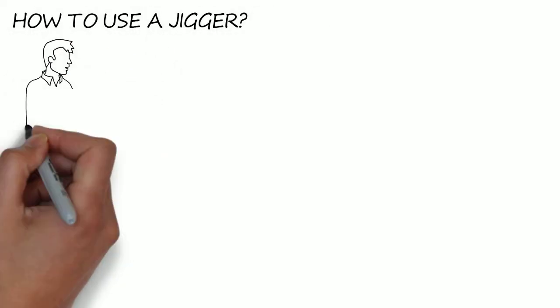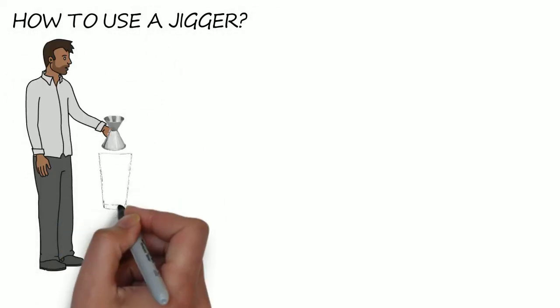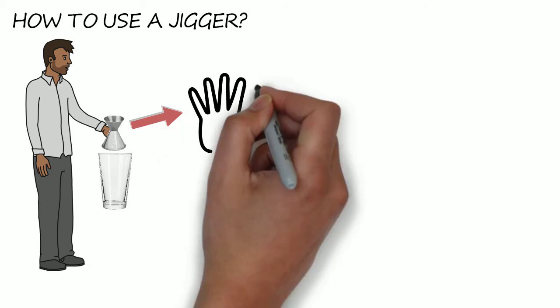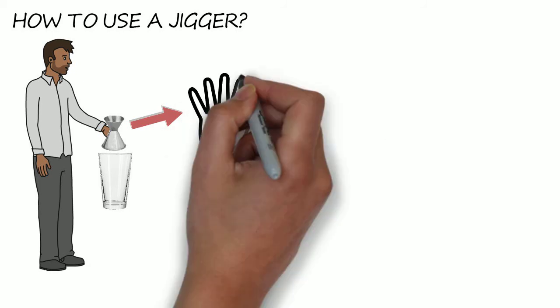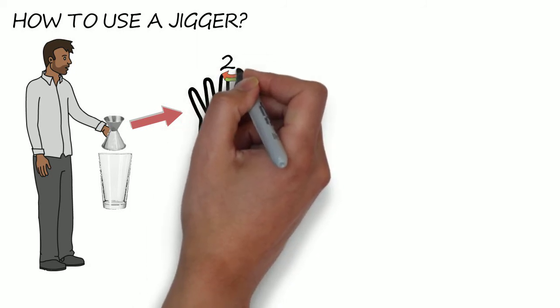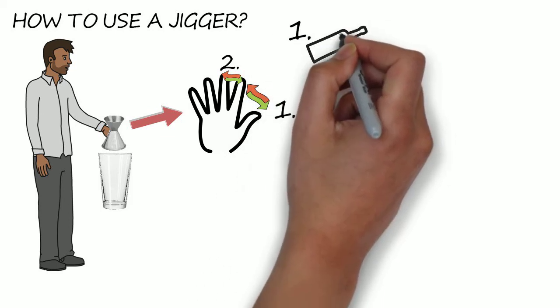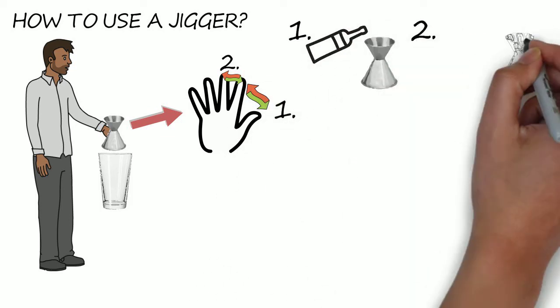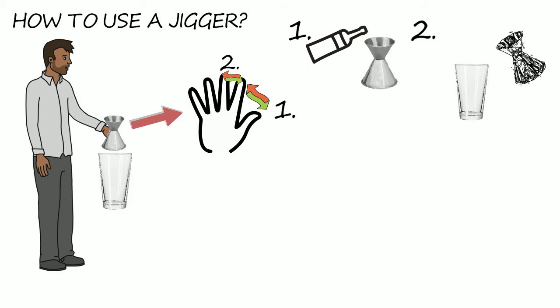How to use a jigger? Hold the jigger in your non-dominant hand right next to your glass and between your thumb and forefinger, or in the case of a double jigger, between forefinger and middle finger for more elegant use. Slowly pour the spirit in the jigger until it fills up completely, then lightly tip it into the glass.